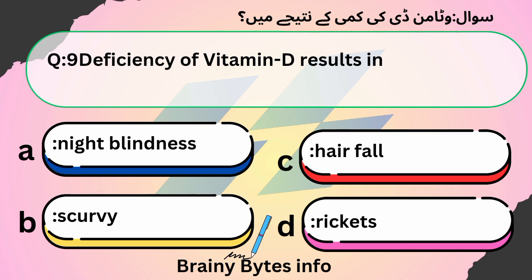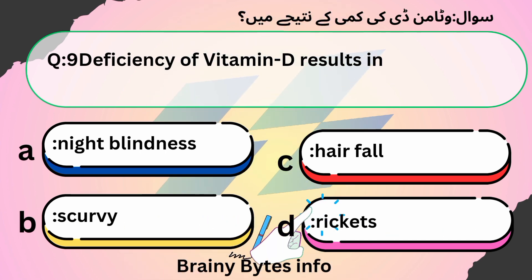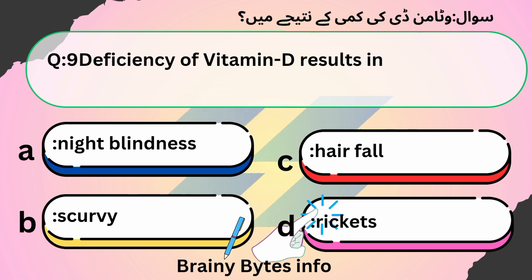Deficiency of vitamin D results in: A. Night blindness, B. Scurvy, C. Hair fall, D. Rickets. Answer: D. Rickets.